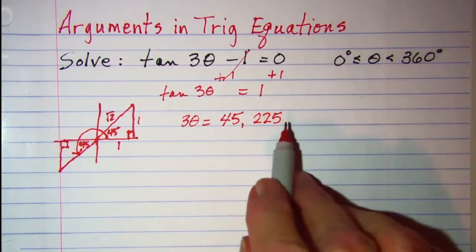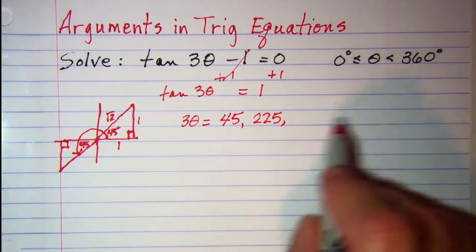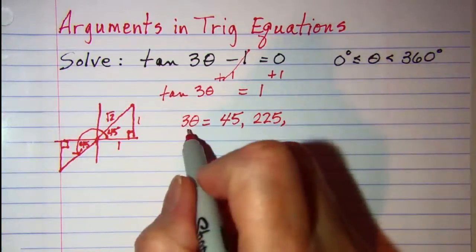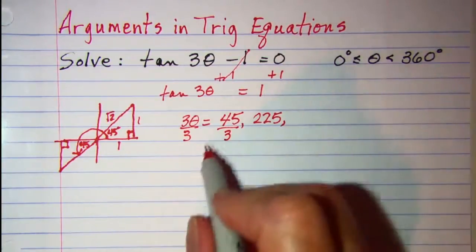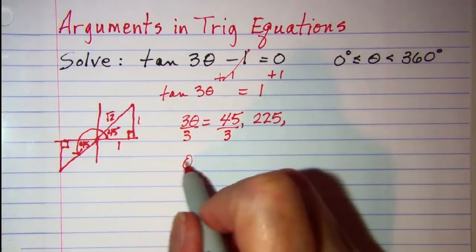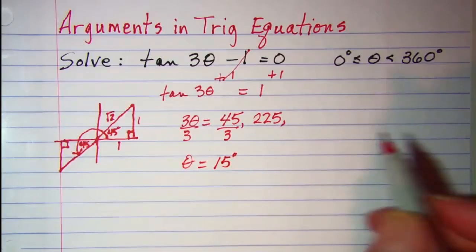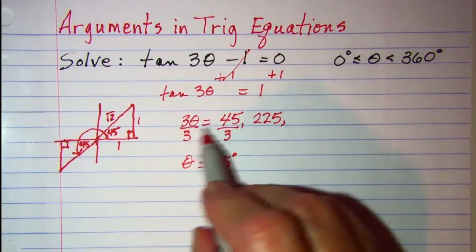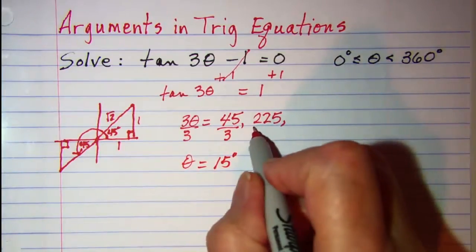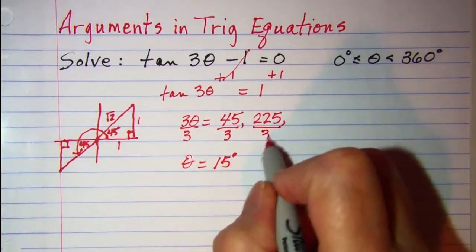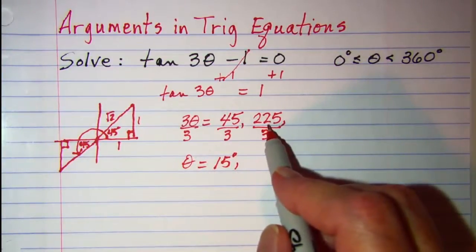Now we're not done here. I'm going to put a comma and then hold off on this because I'm going to have some more here. Because once I divide by 3 on both sides, I get θ is equal to 15 degrees. And then when I divide 3θ equals 225, divide both sides there, I get θ is equal to 75.